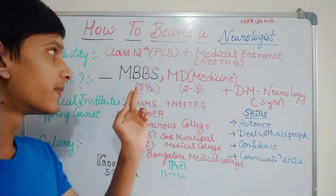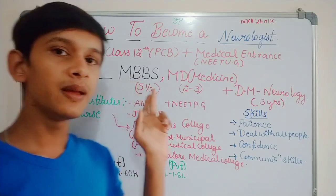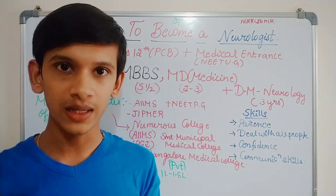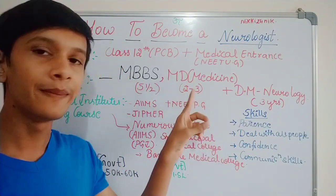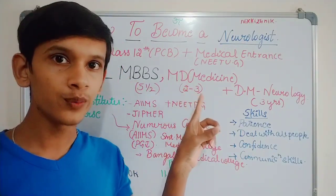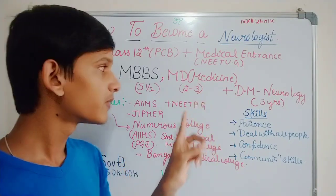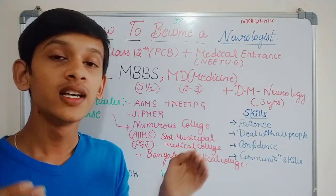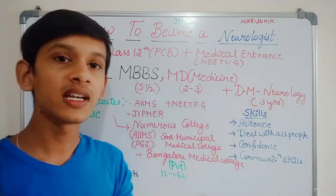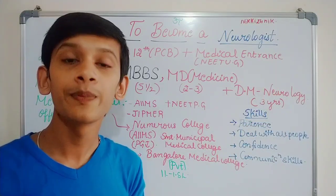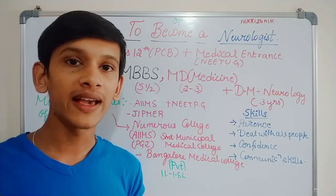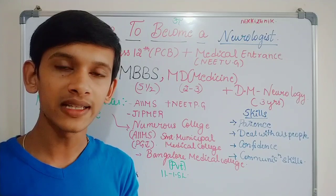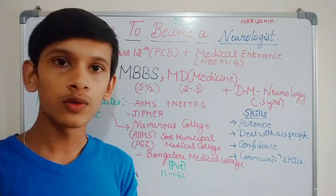For eligibility, for MBBS you will study 5 and a half years. Next, you will study MD Medicine with a Neurology specialization. Then last is DM — Doctorate of Medicine in Neurology. If you are an expert, you will continue your practice. You will also look into placements.